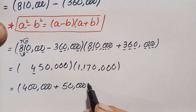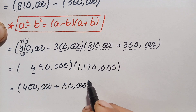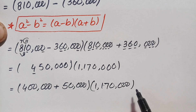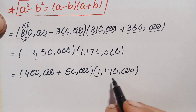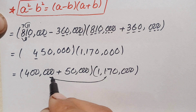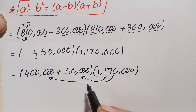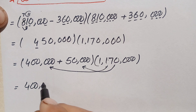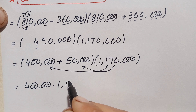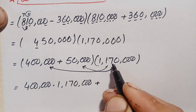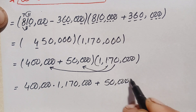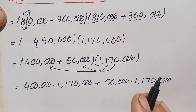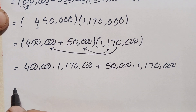So the place value of 4 is 400,000 and the place value of 5 is 50,000, giving us 400,000 plus 50,000, each multiplied by 1,170,000. We multiply 1,170,000 by 400,000 first, and then multiply 1,170,000 by 50,000, and finally add their results together.